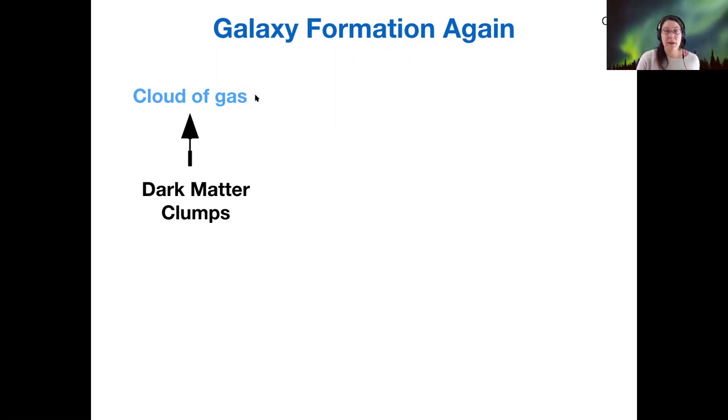together into clouds. And when we discussed the Milky Way formation model, we said that it started with a cloud of gas that collapsed. But we didn't tell you where that cloud of gas came from. Now you know.